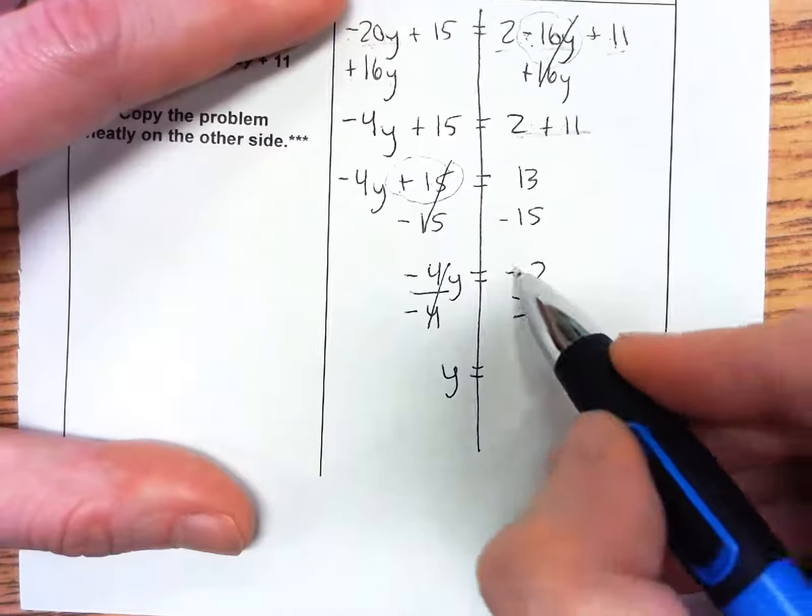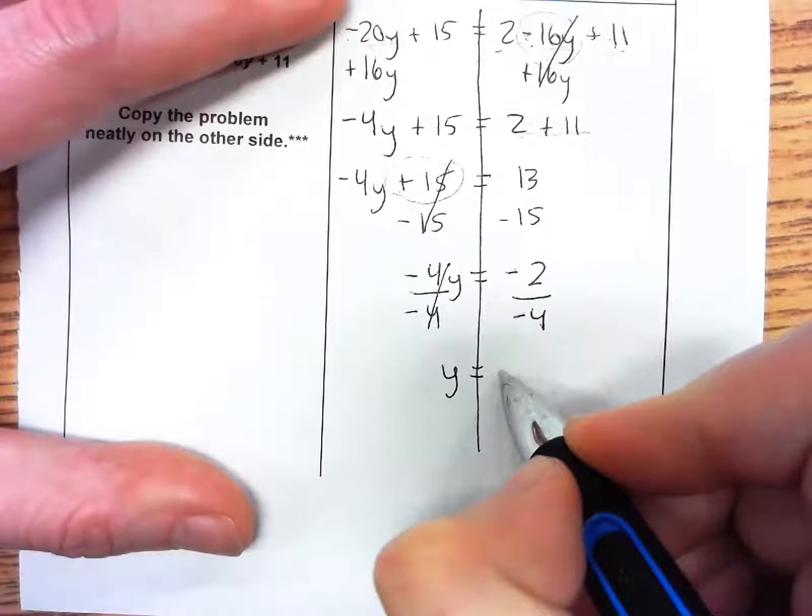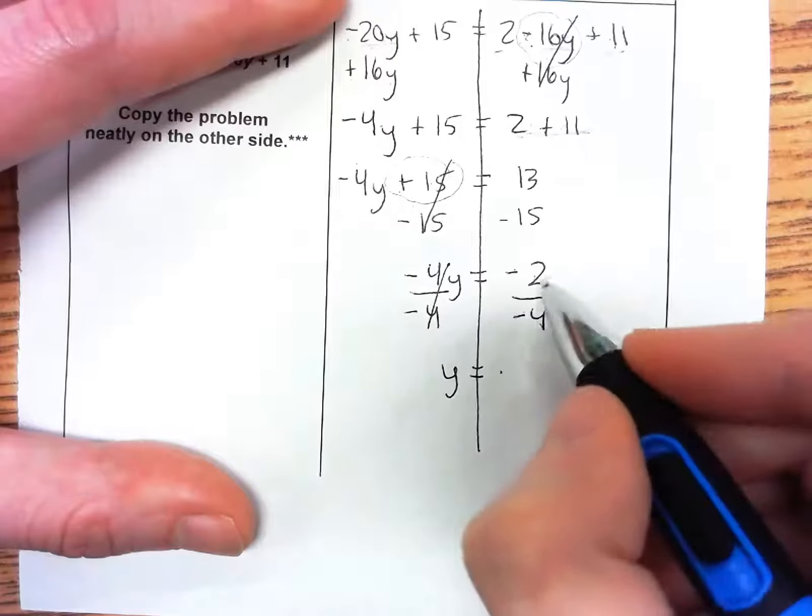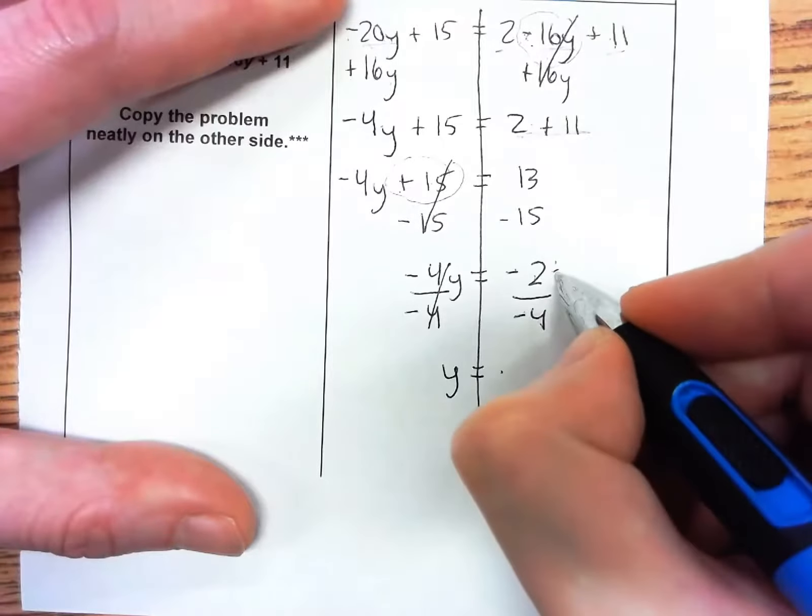Let's think about the sign first. A negative divided by a negative is a positive. Then 2 divided by 4—we can't do that into a whole number, but we can simplify.